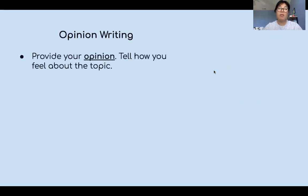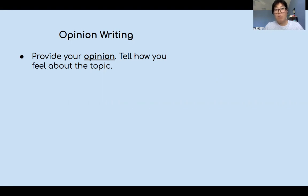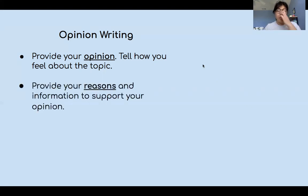Remember, opinion writing consists of these things. First, you need to provide your opinion — you're telling the readers and the audience what you feel about the topic. Opinions are not based on fact; they're based on each individual's feelings or beliefs. So my opinion can be different from your opinion. Next, you need to provide your reasons — why do you feel about a certain topic? Why do you feel or believe that way? You need to provide reasons to support your opinion.